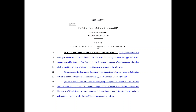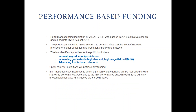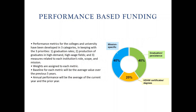The Performance Incentive Funding Act of 2016 was signed into law in August 2016 with three main priorities, one of which is increasing the number of graduates in high demand, high wage fields of study. As you can see from the donut chart, 20% of the formula is actually based on the school's ability to increase high demand, high wage certificates and degrees.